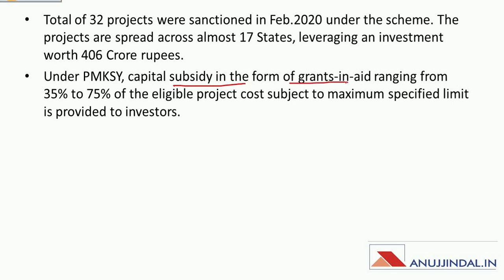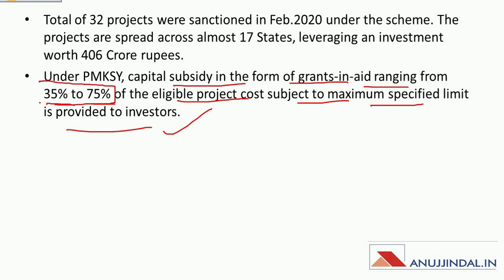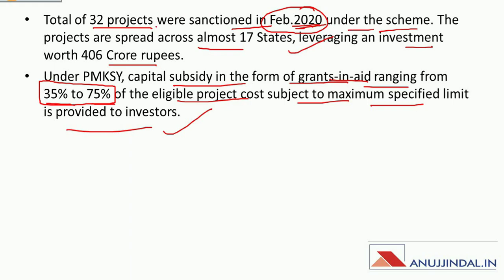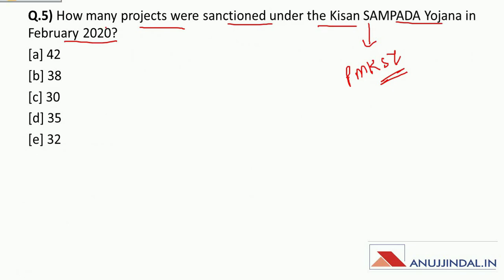Under this scheme, a capital subsidy in the form of grants ranging from 35 percent to 75 percent of the eligible project cost, subject to a maximum specified limit, is provided to investors. A total of 32 projects were sanctioned in February 2020 under the scheme. The projects are spread across almost 17 states, leveraging investment worth rupees 406 crore. Therefore the correct answer is 32 projects were sanctioned under PM Kisan Sampada Yojana.